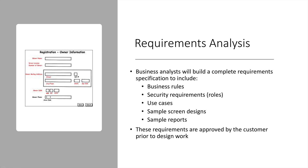The next step in the process is the requirements analysis. In this phase, business analysts will build a complete requirement specification that includes business rules for the system, security roles, and what different types of people are allowed particular access to the system. You'll look at use cases — common scenarios of how people are going to use the system. They'll generate sample design screens and walk through them with potential users to make sure the system will meet their needs. Sample reports are also important at this point, because reports drive the kind of data that needs to be in the system. These requirements need to be approved by the customer with a formal approval before work begins.